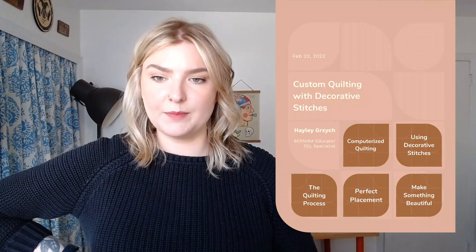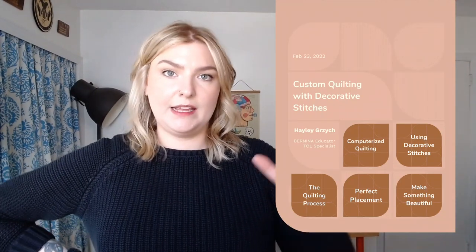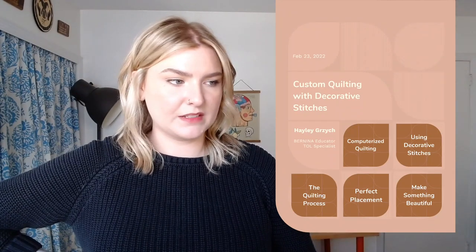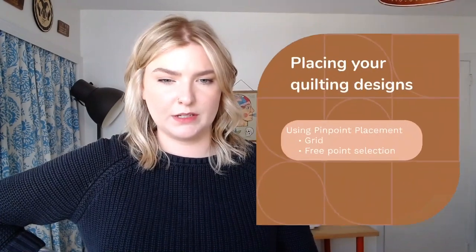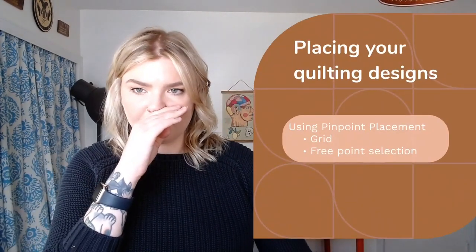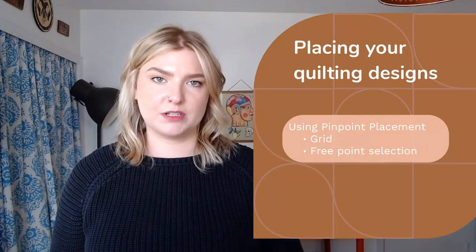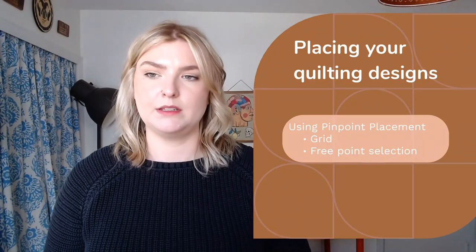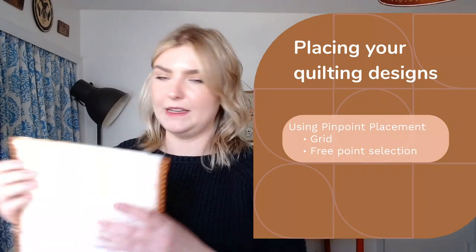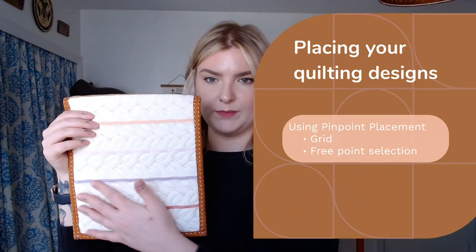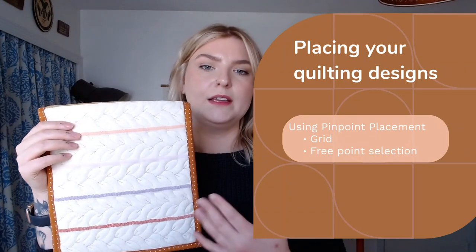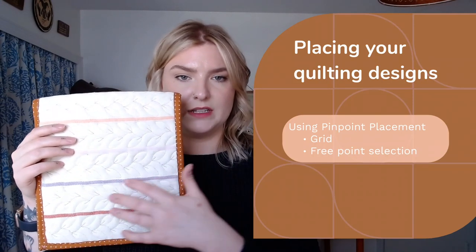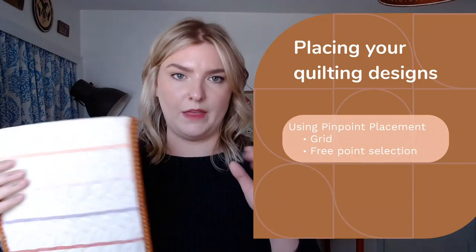Our design is all set up and let's get ready to position it and stitch it out. I have some tips on positioning and some settings to check for stitching out computerized quilting. Number one: there are a lot of different ways to position designs in embroidery, but my favorite and the most precise option is pinpoint placement. I want my quilting to fit neatly within the wide white stripes on my fabric, and pinpoint placement is going to help me position my design perfectly straight down and make sure I don't stitch into the colored lines.